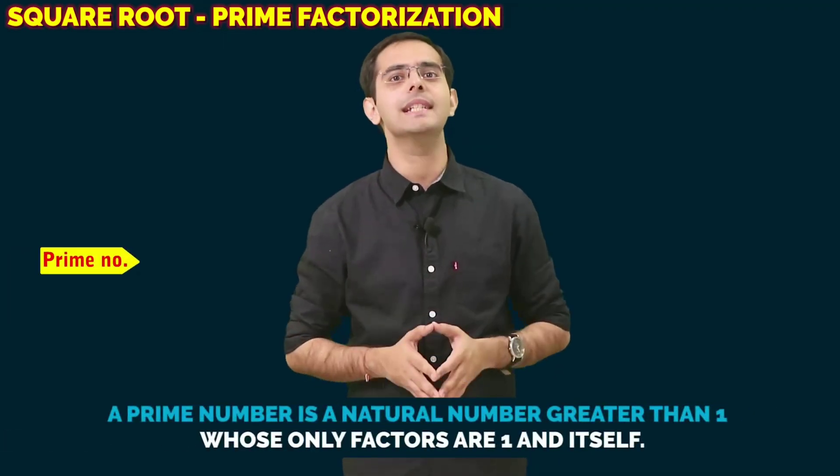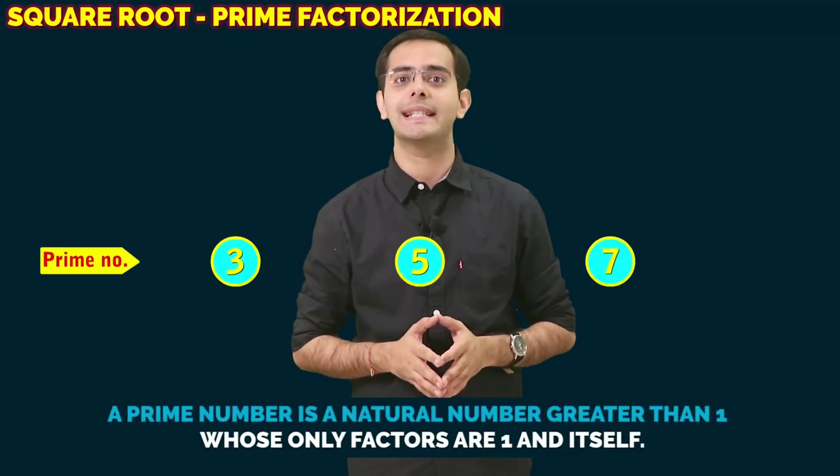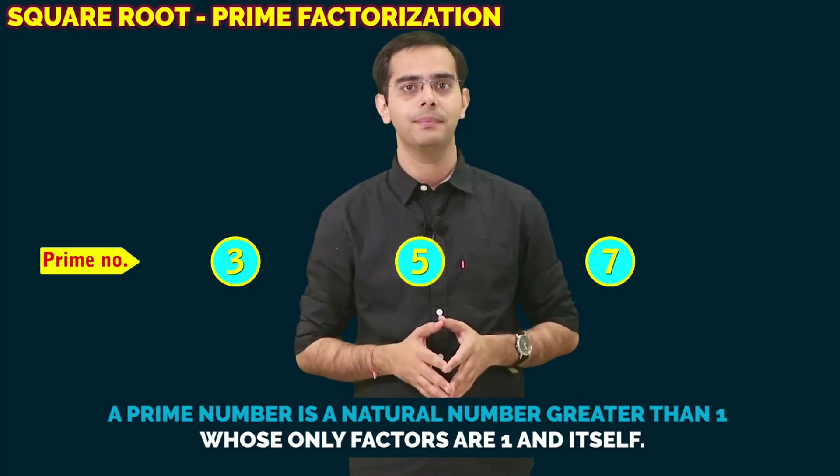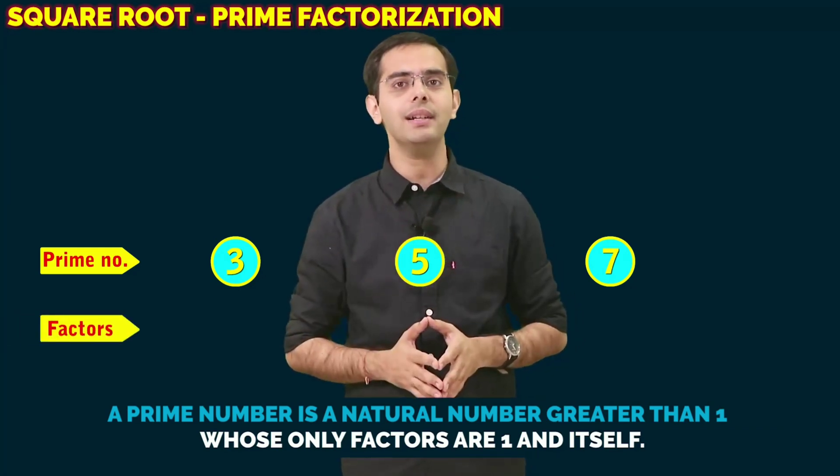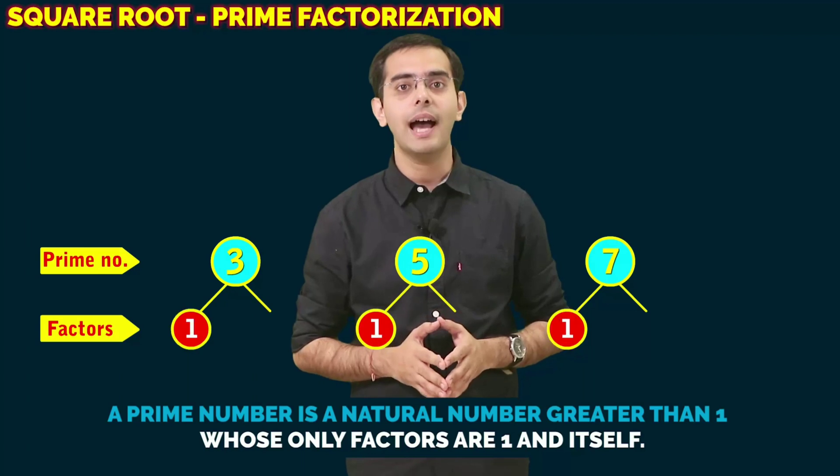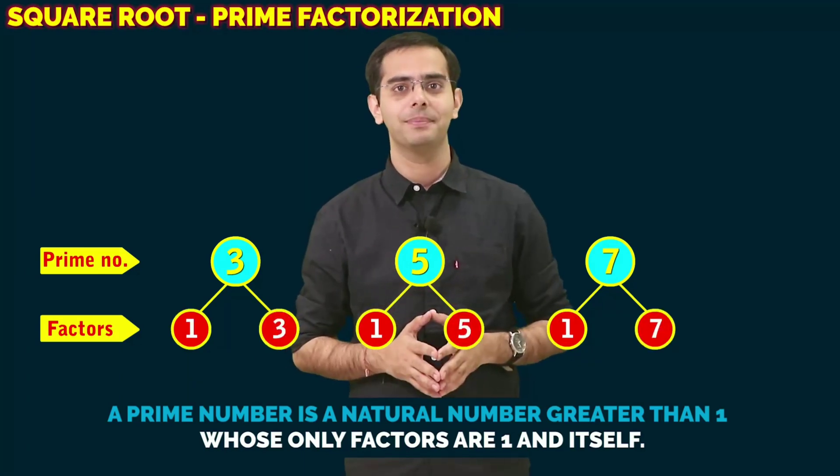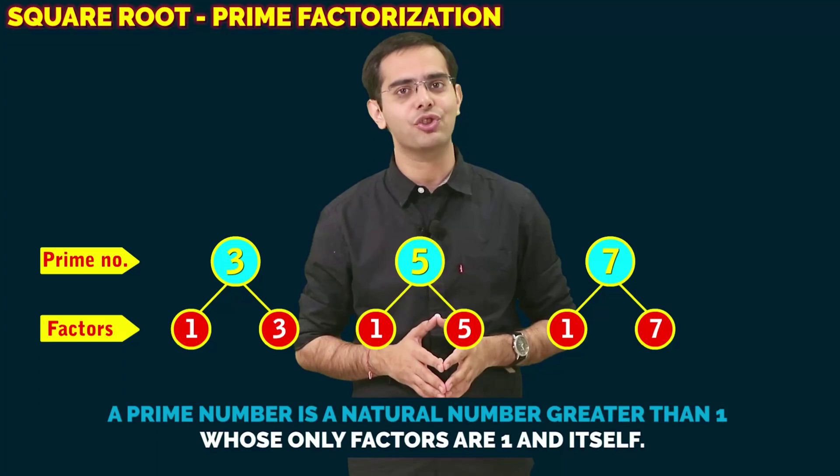A prime number is a natural number which is greater than 1 and whose only factors are 1 and the number itself. So can you tell me what is prime factorization?